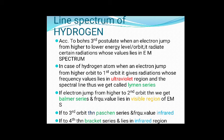The Lyman series is obtained when an electron jumps from a higher orbit to the first orbit of the hydrogen atom. The frequency of the radiated radiation lies in the ultraviolet region of the electromagnetic spectrum.